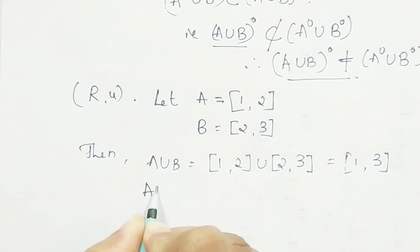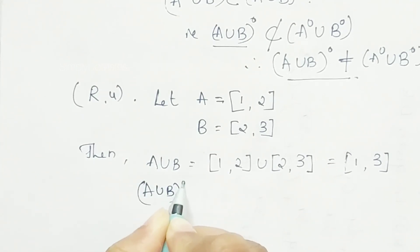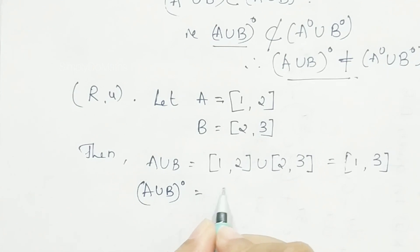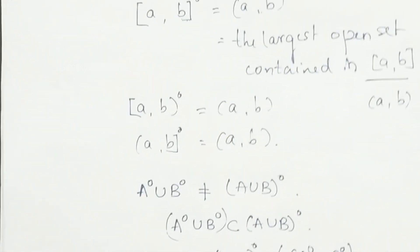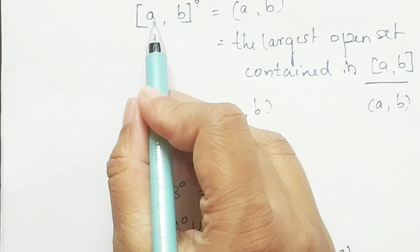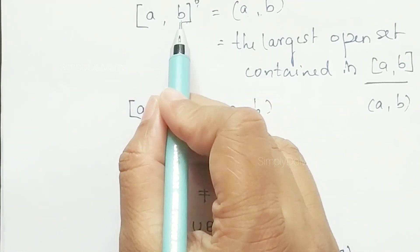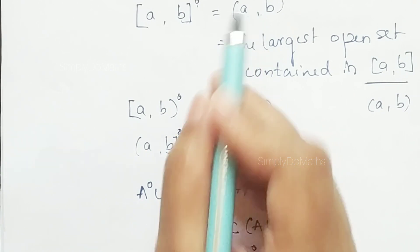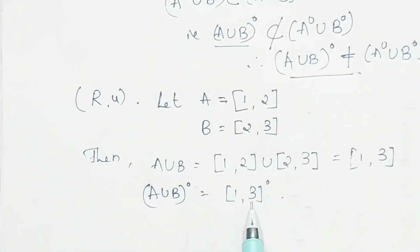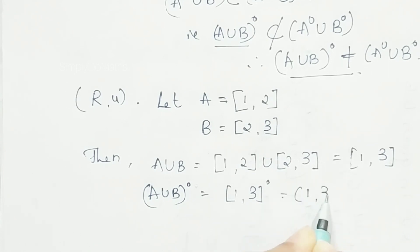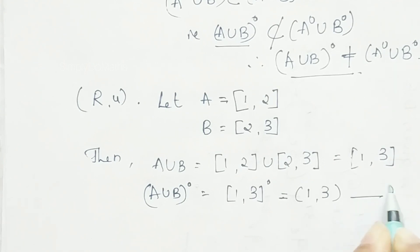Now let us find the interior of A ∪ B, which is the interior of the closed interval [1, 3]. As we know, the interior of a closed interval [A, B] is the open interval (A, B), so the interior of [1, 3] is equal to the open interval (1, 3). Call this equation 1.